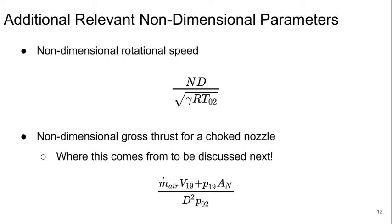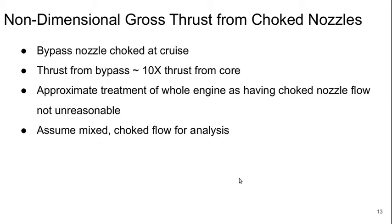And we also have the non-dimensional gross thrust from a choked nozzle. This is a little bit complicated looking because we've got two terms in the numerator. We've got a term that comes from the mass flow rate and the exit velocity and then plus another contribution from a pressure term. We'll talk about this now. So the non-dimensional gross thrust coming from the choked nozzle, this is what that parameter represents. We know our bypass nozzle is choked.